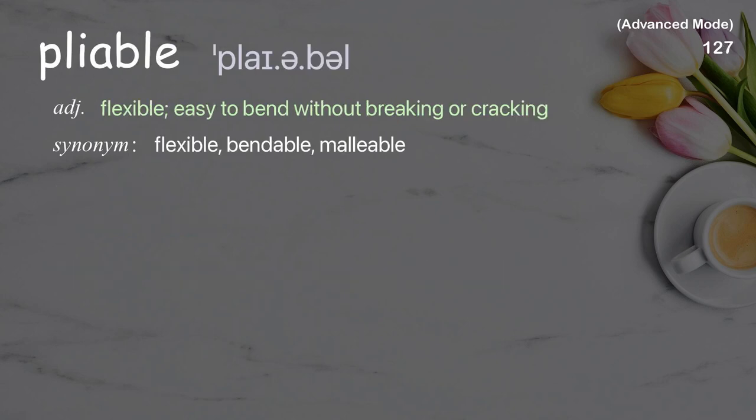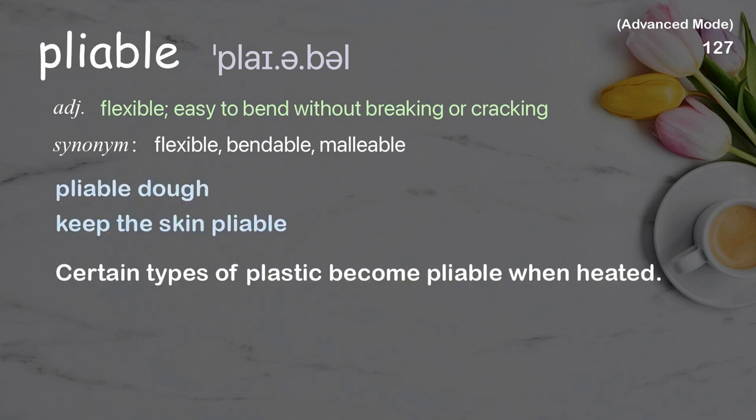Pliable: flexible; easy to bend without breaking or cracking. Examples: pliable dough, keep the skin pliable. Certain types of plastic become pliable when heated.